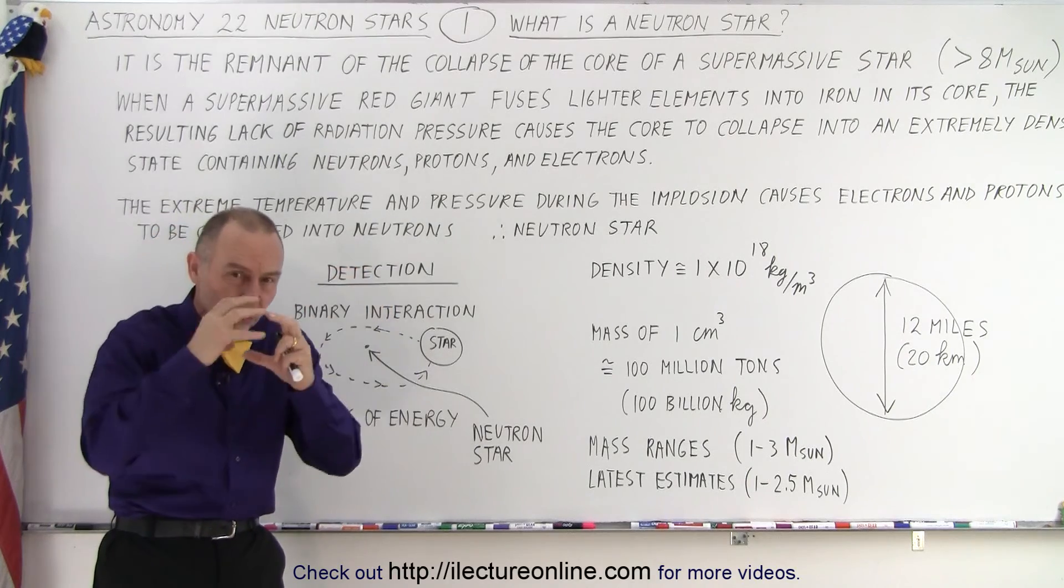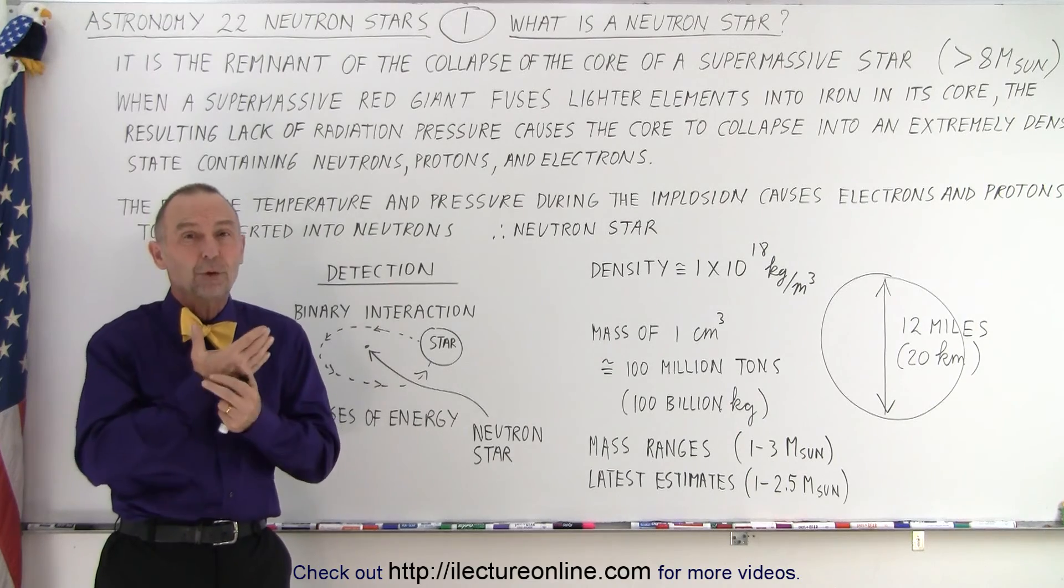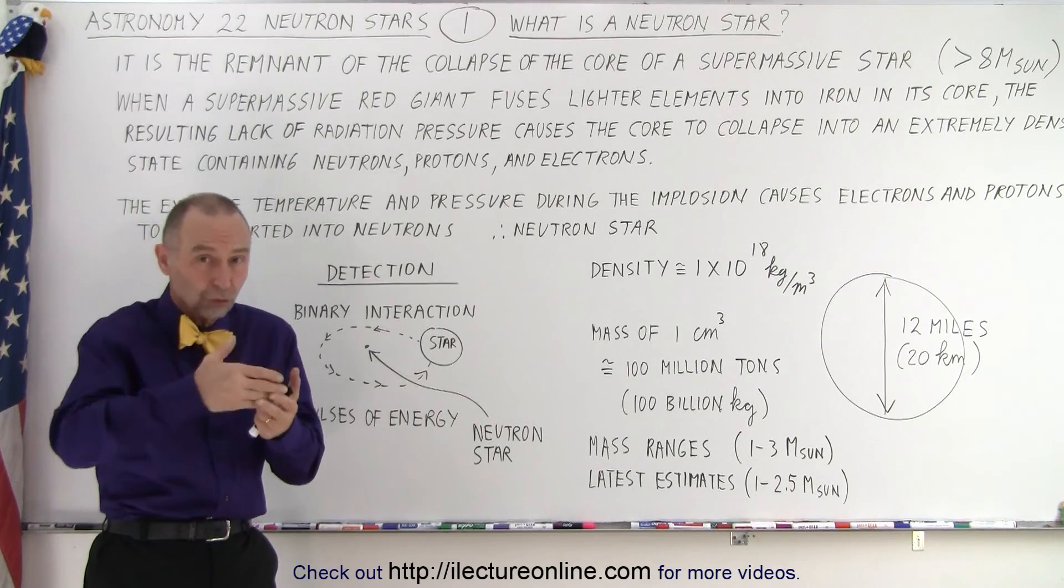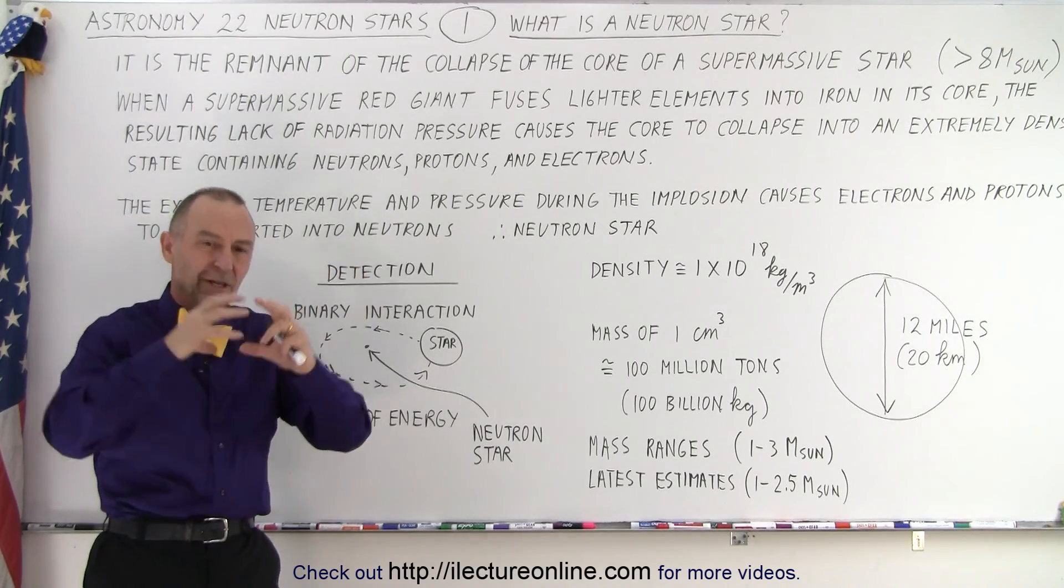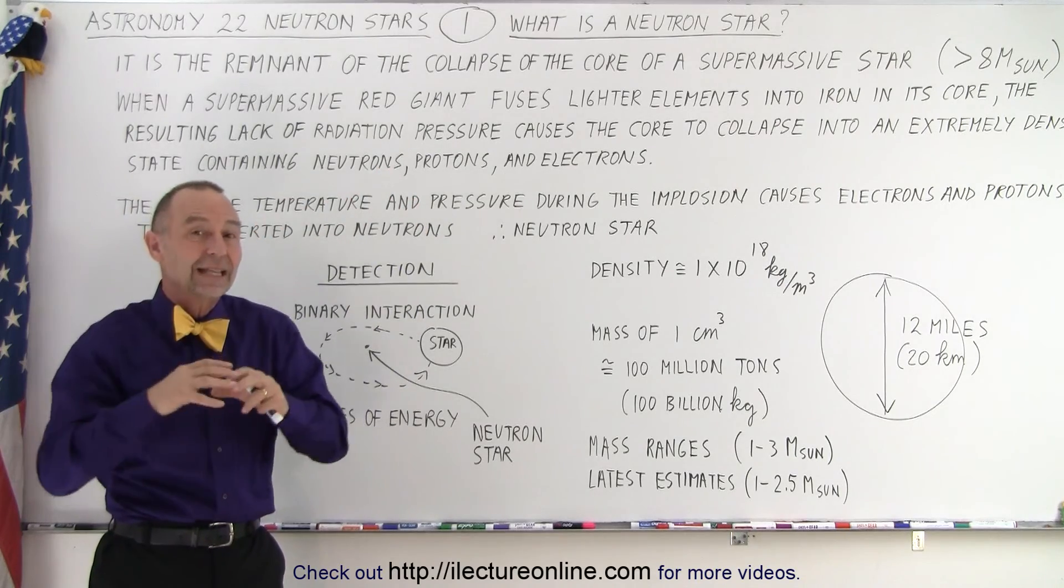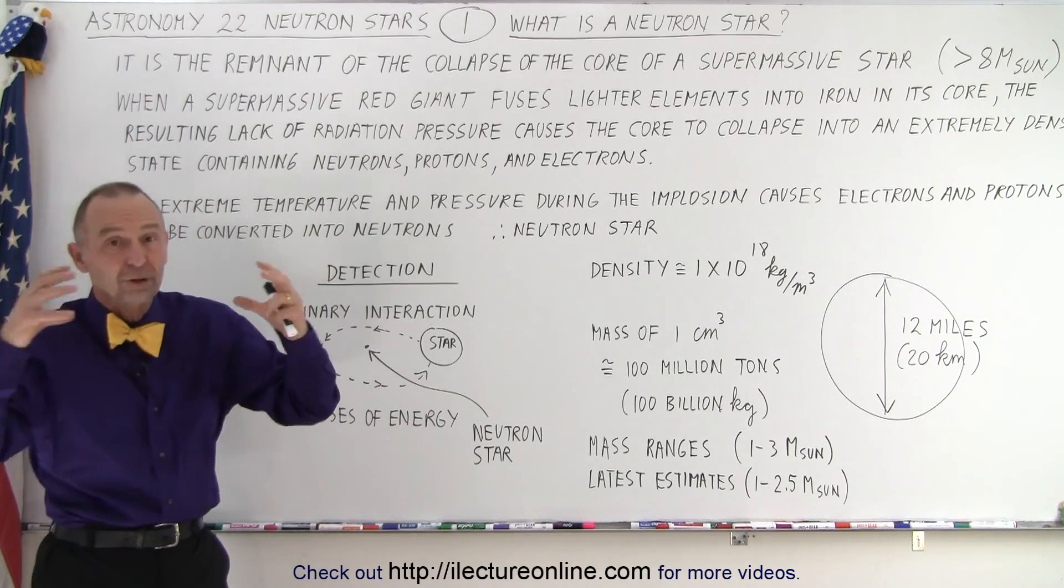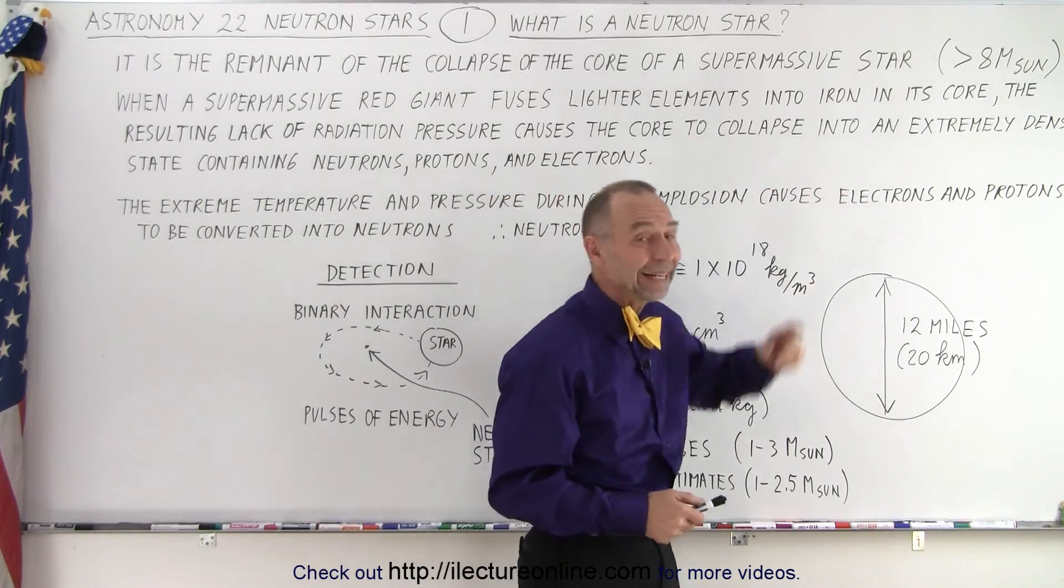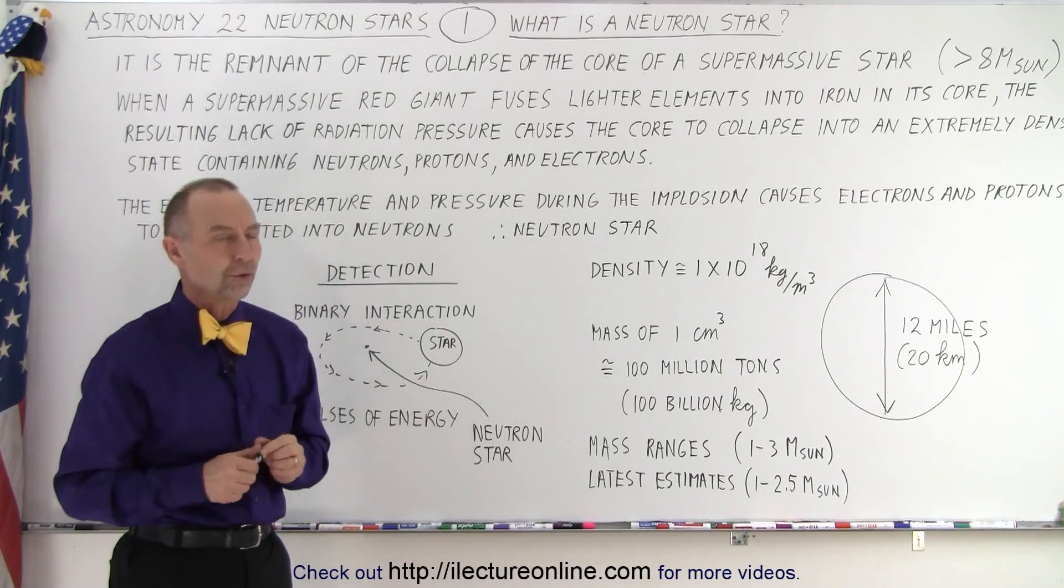which causes the core to be pushed down to an extremely dense state. Now during that process, the photodisintegration, the disintegration of the largest nuclei into smaller nuclei, and eventually into neutrons, protons, and electrons, when that massively combines and comes together into an extremely dense state, it doesn't rebound back, it stays in that dense state and then becomes a neutron star. So essentially the neutron star is a remnant of a collapsed core of a supermassive star. Stars typically that have a mass greater than eight times the mass of the sun, those are the ones that eventually will end up in something called a neutron star.